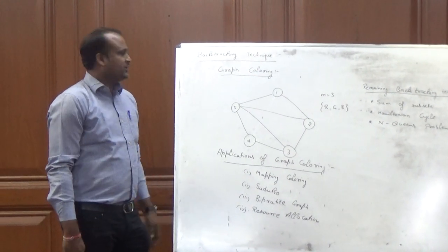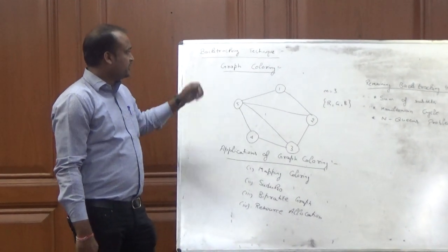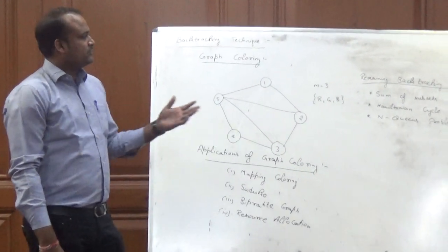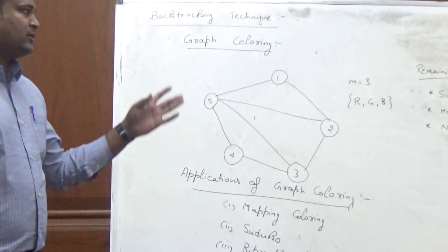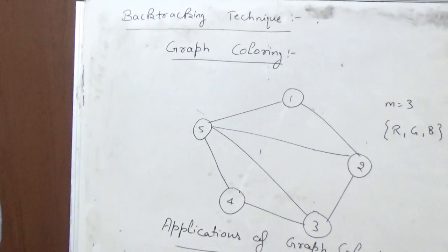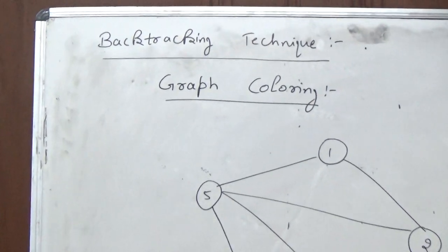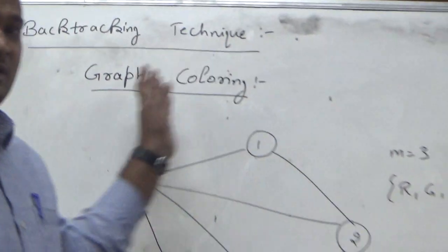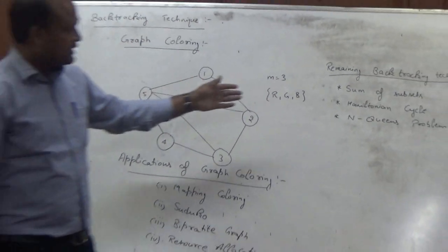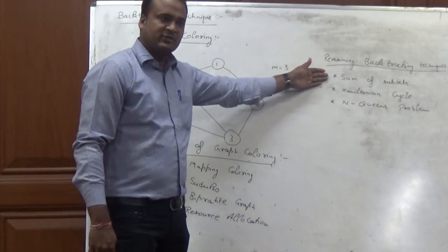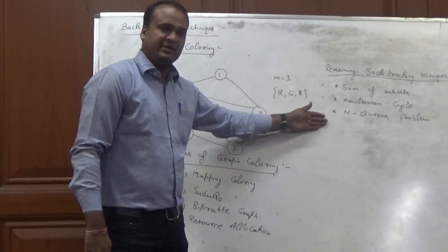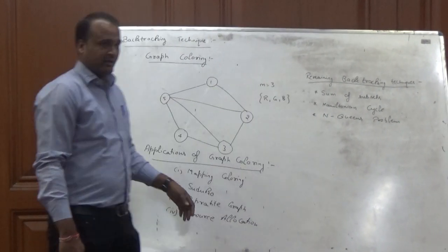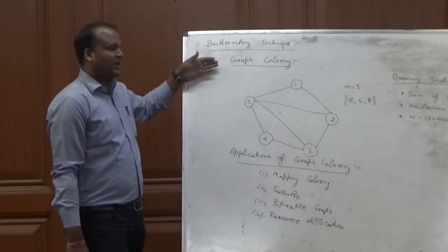Hello students. Today's topic is graph coloring. Basically, graph coloring is a backtracking technique. There are a number of backtracking techniques possible in the design and analysis of algorithms. The leading techniques we will discuss after this topic include sum of subset, Hamiltonian cycle, and field problem. These are problems under the backtracking technique. So today's topic is graph coloring.